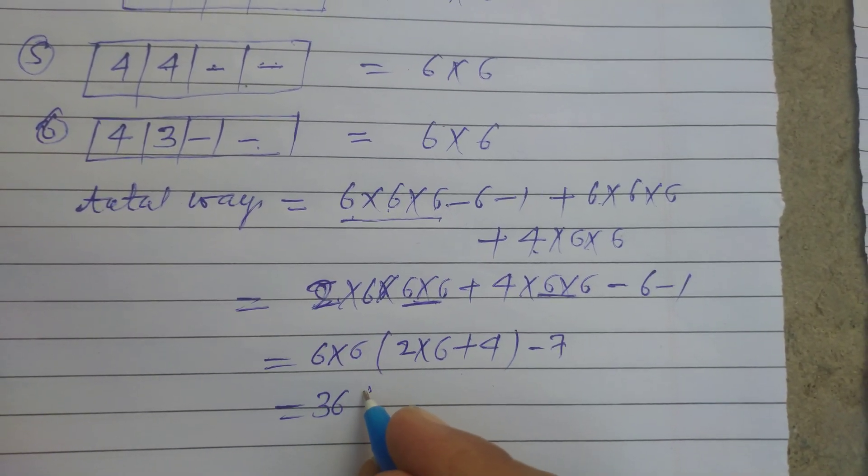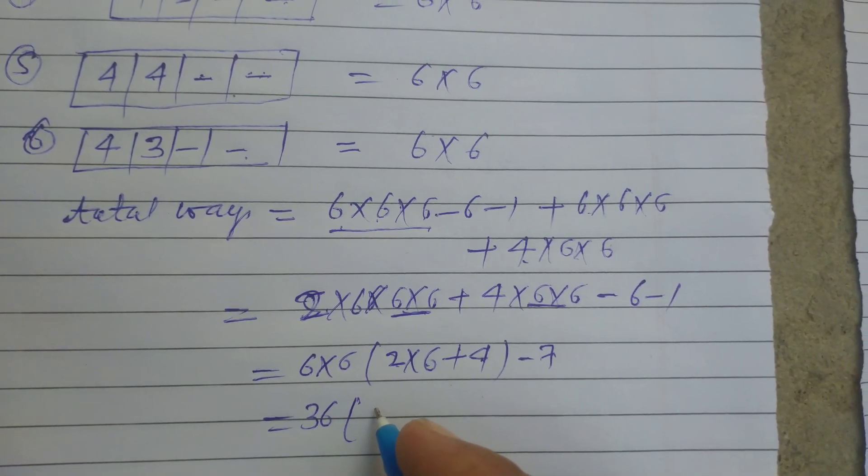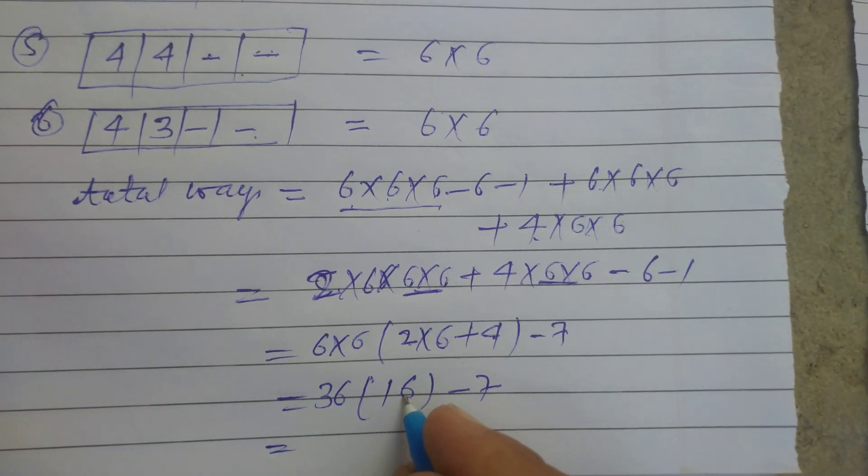This is 36, and 2 into 6 is 12, plus 4 is 16, minus 7.